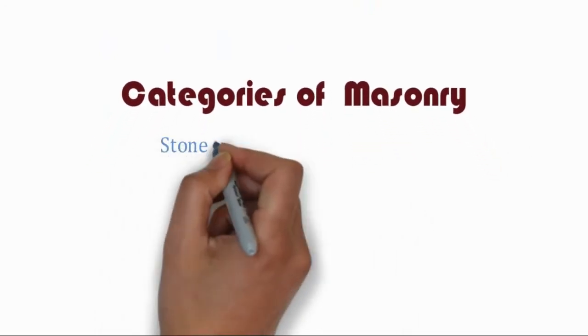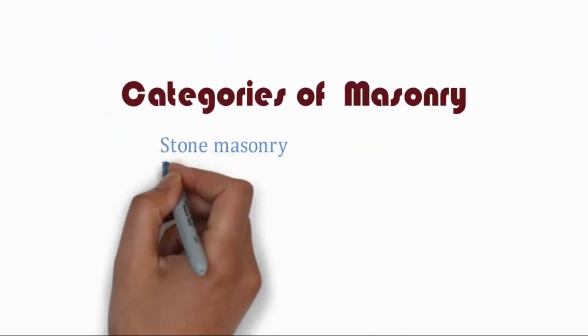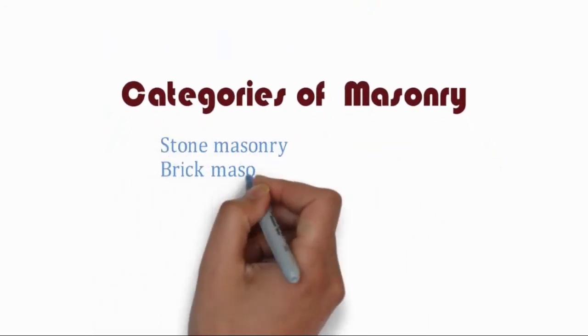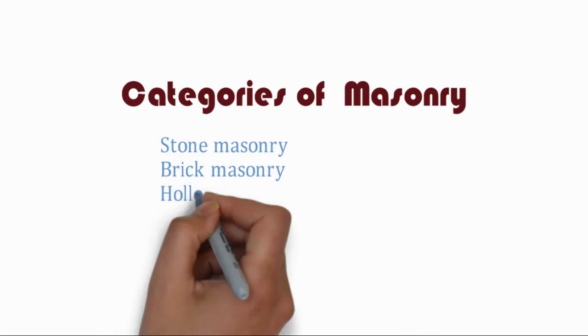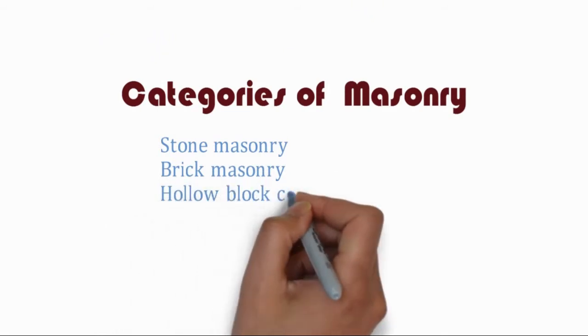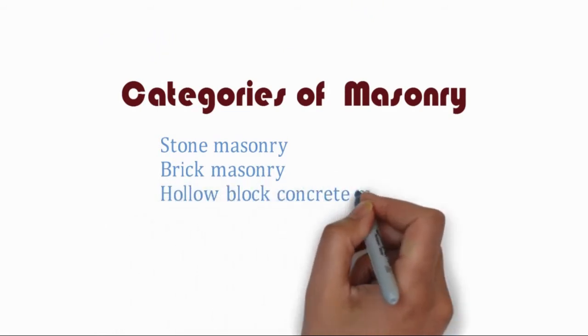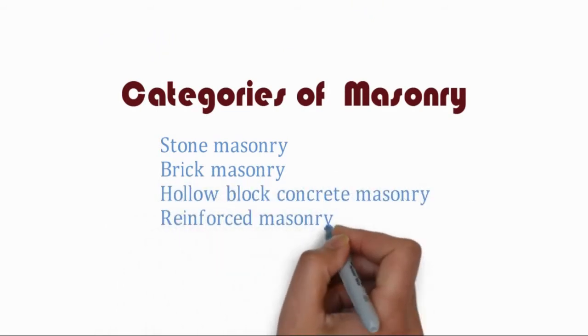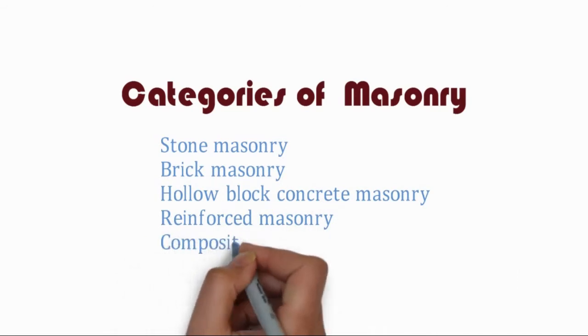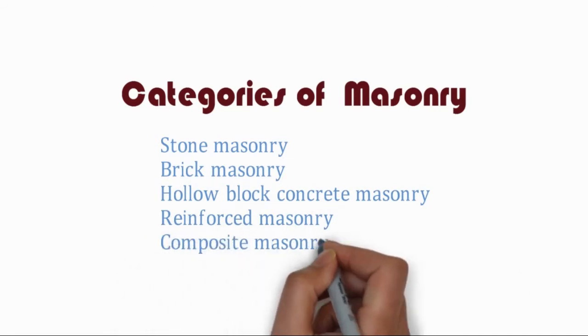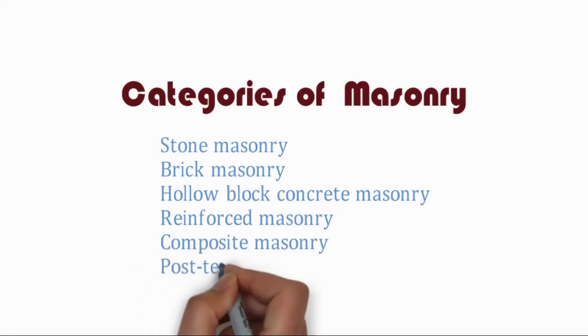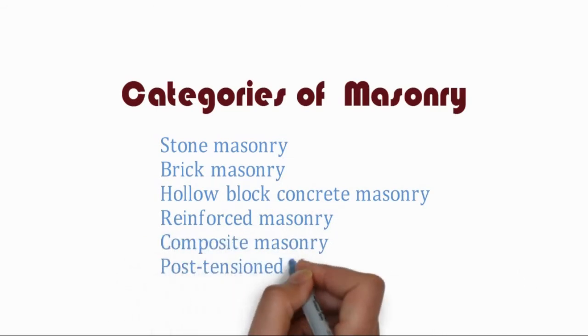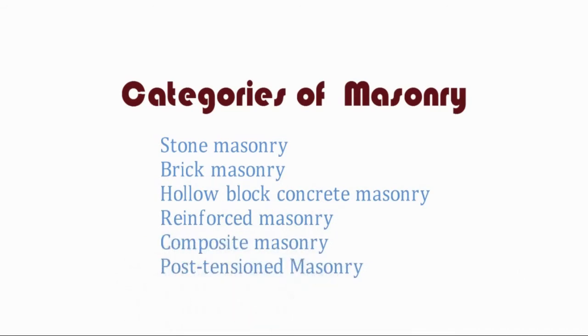Categories of masonry: Stone masonry, Brick masonry, Hollow block concrete masonry, Reinforced masonry, Composite masonry, Post-tension masonry.